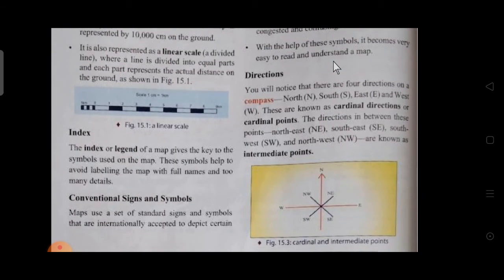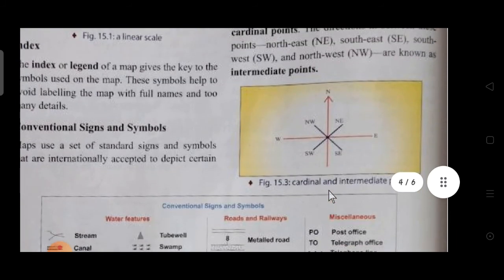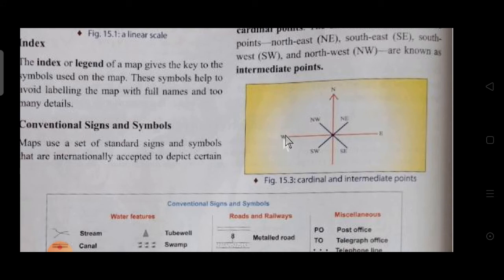Now the fifth component is direction. We have four main directions in the compass which are north, south, east and west. You can remember it as NEWS. These are known as cardinal directions or cardinal points. The directions in between these are called intermediate directions. You will notice that intermediate directions start from north or south, not from east or west. Between north and west is northwest, south and west is southwest, north and east is northeast, south and east is southeast.